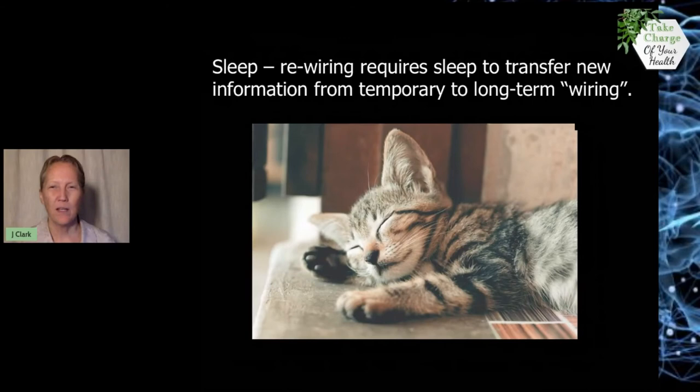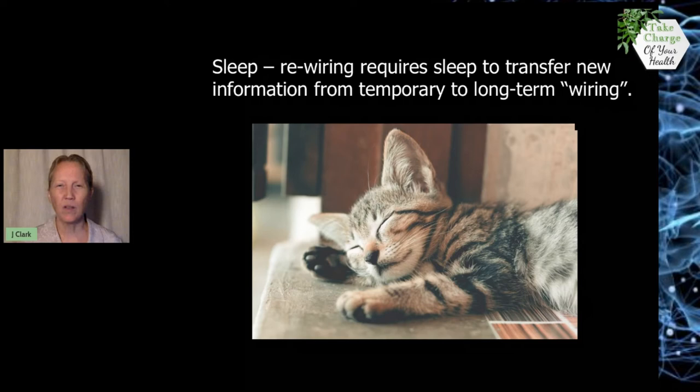The third principle is sleep. This is becoming more important than we realize. And so your brain really is important for all kinds of functions to get really good regular sleep. It's critically important for rewiring the brain. Sleep is key for short-term wiring and to be transferred into long-term wiring. It's critical for health, physically, and mentally.